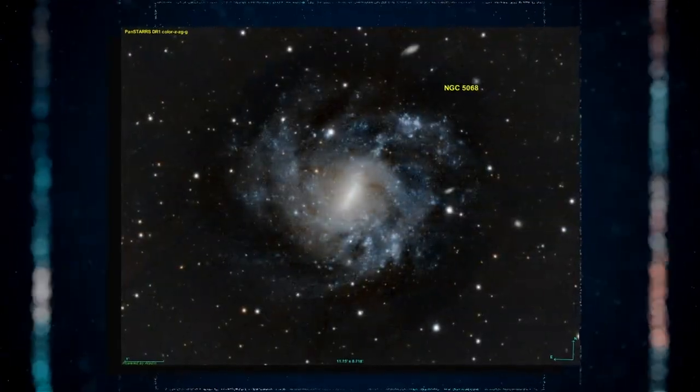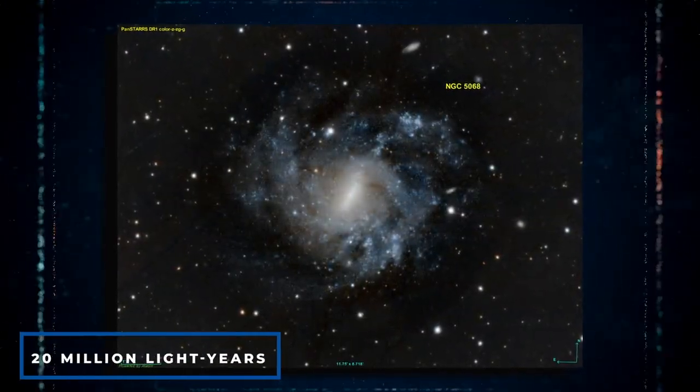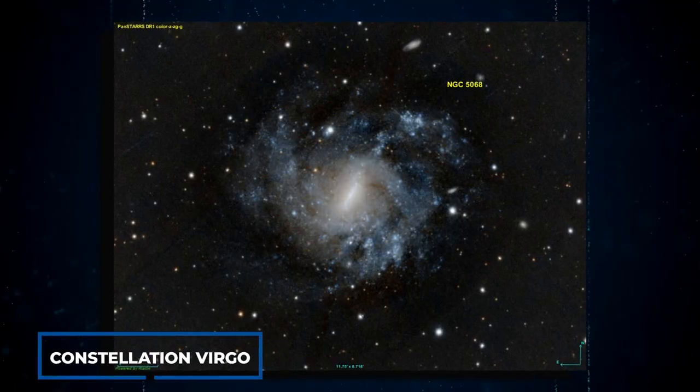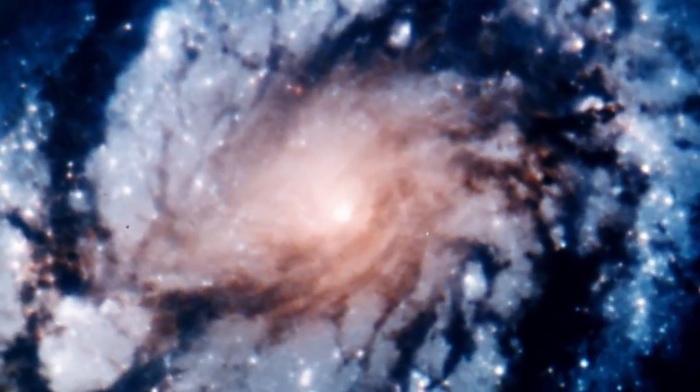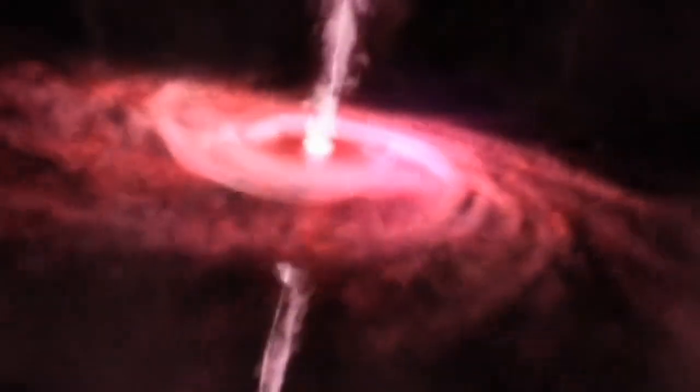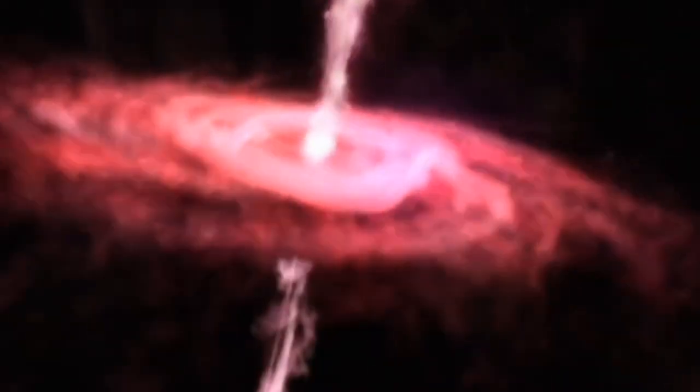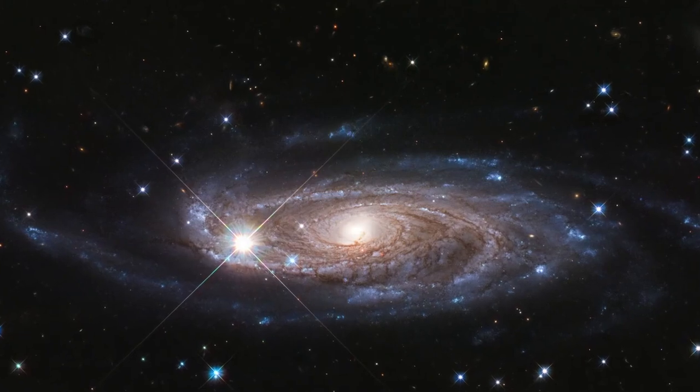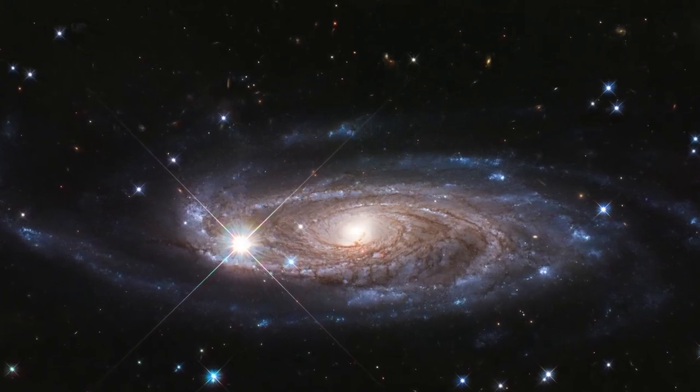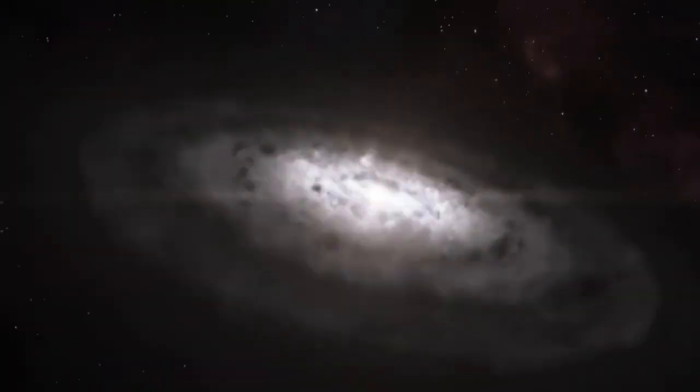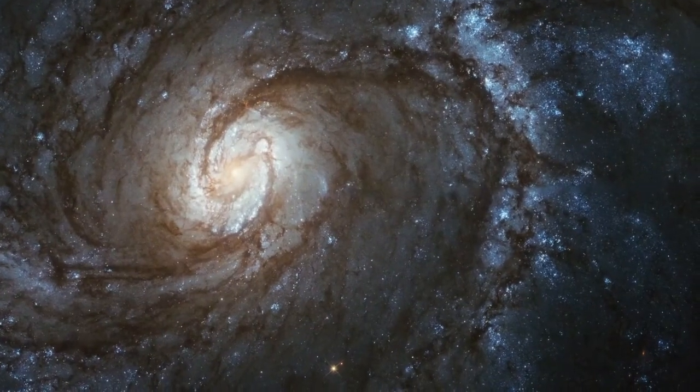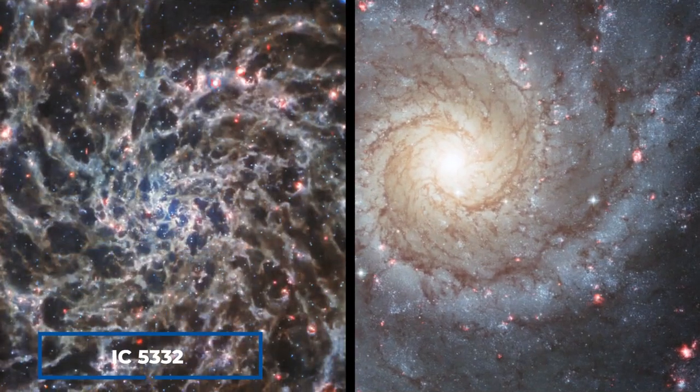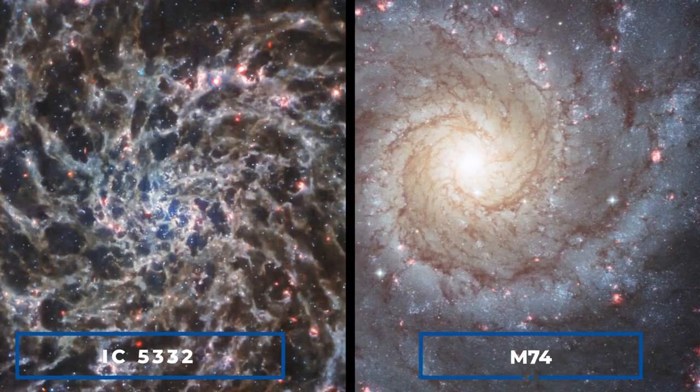NGC 5068 resides approximately 20 million light years away from Earth in the constellation Virgo. This latest image focuses on the central regions of the galaxy where intense star formations occur. It is part of a larger campaign aiming to create an astronomical treasure trove, a collection of observations documenting star formation in nearby galaxies. Previous captivating images from this project include IC 5332 and M74.